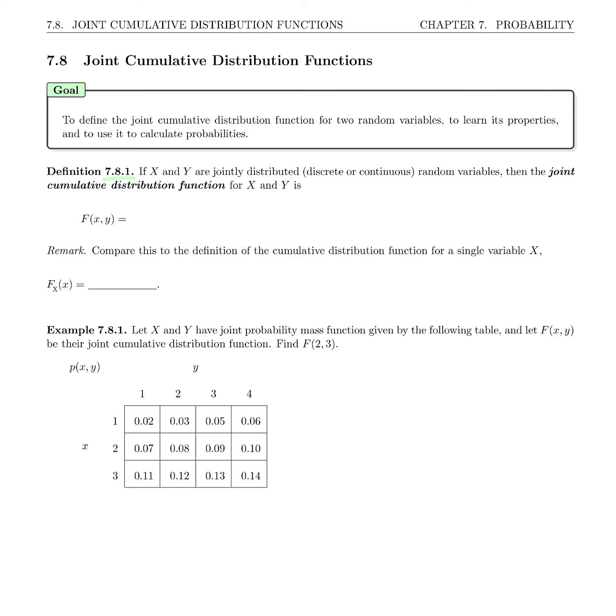Definition 7.8.1: If X and Y are jointly distributed discrete or continuous random variables, then the joint cumulative distribution function for X and Y is F(x,y), which is the probability that X is less than or equal to little x, and Y is less than or equal to little y.